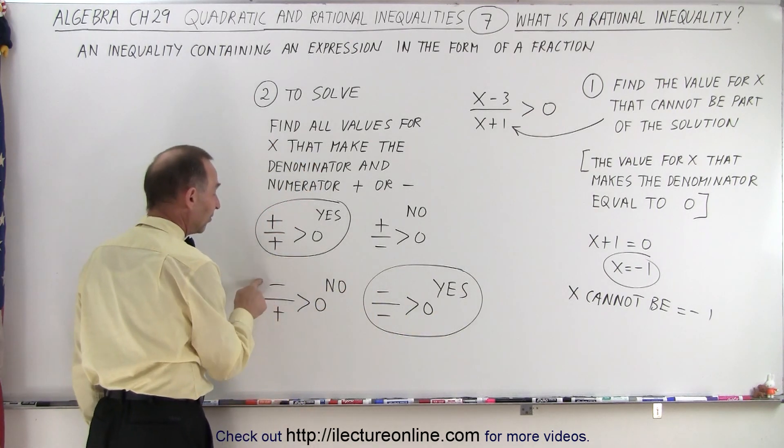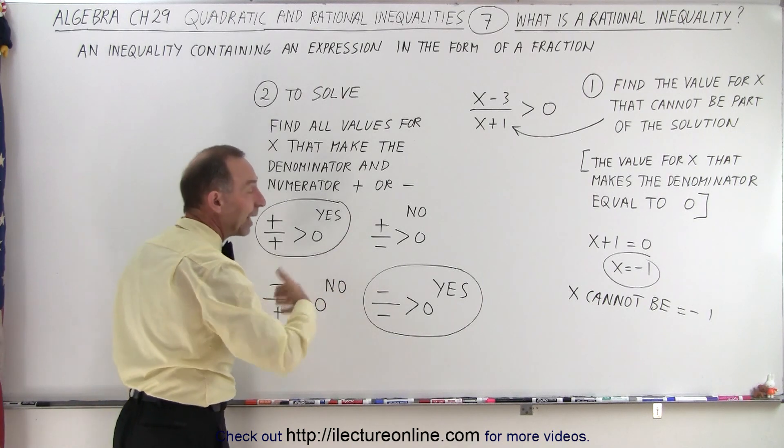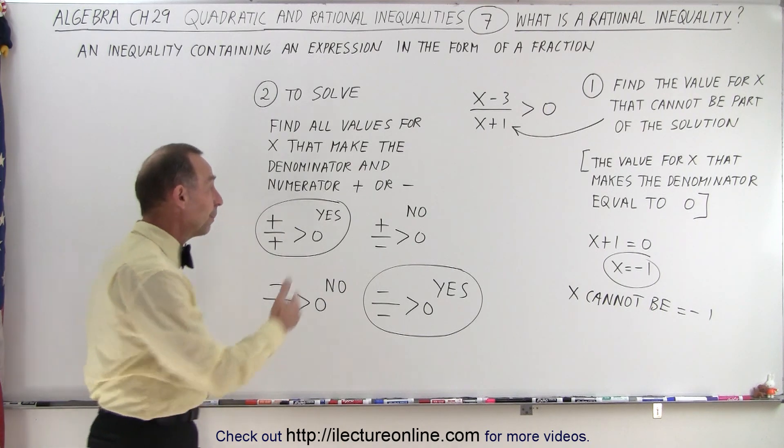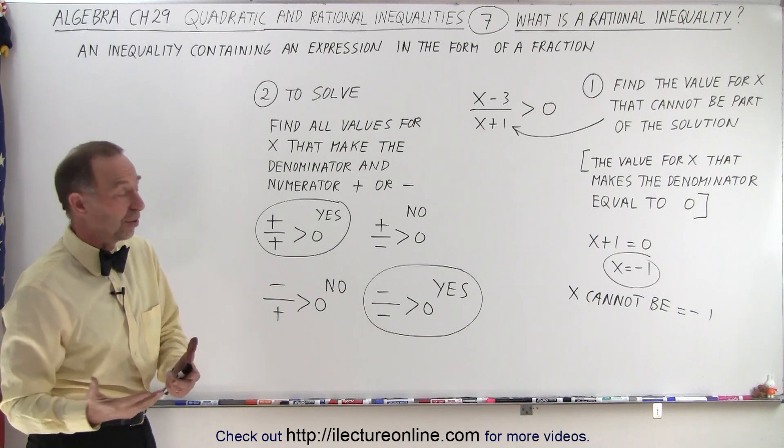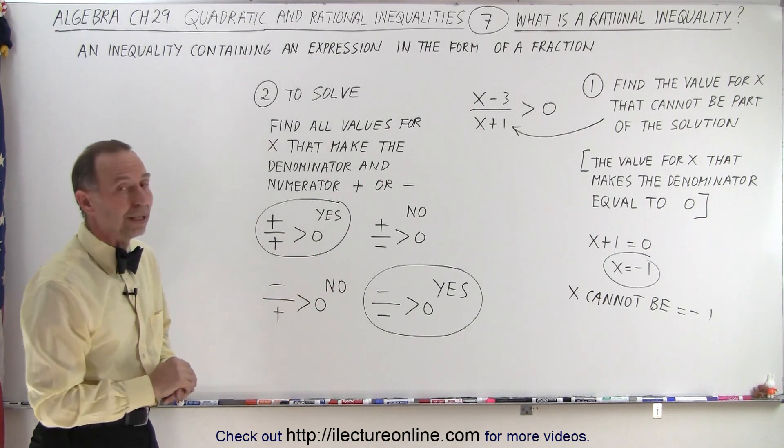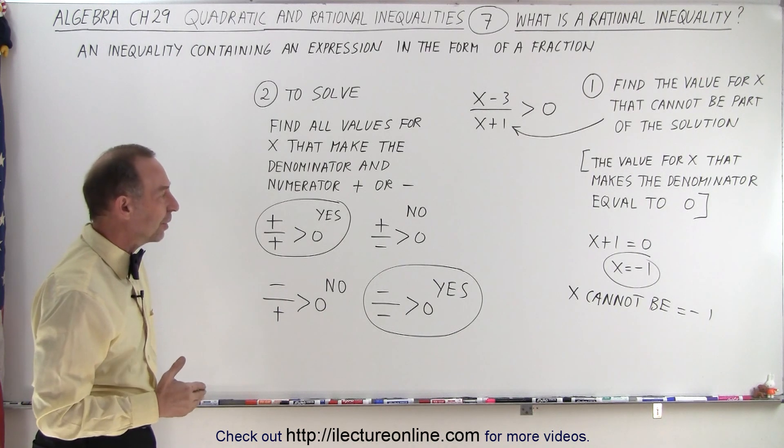But if one is negative and the other one is positive, it doesn't matter in which order, that cannot be part of the solution. When I divide a negative number by a positive number, or a positive number by a negative number, I do not get something that's greater than 0. I get something that's less than 0, so it does not satisfy the inequality. That's how we're going to start solving these problems.